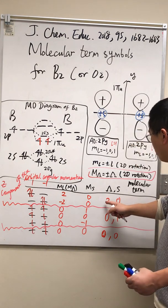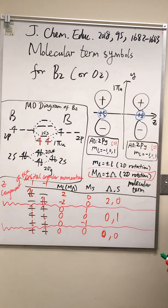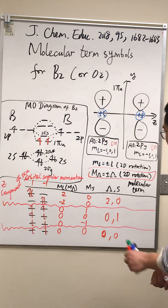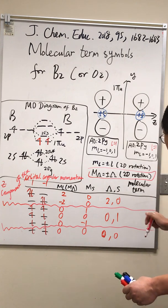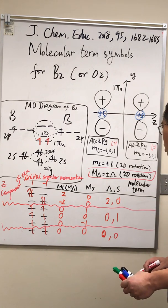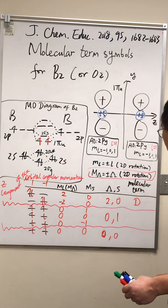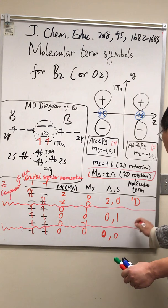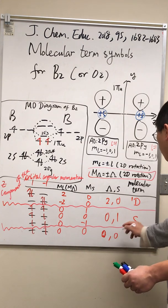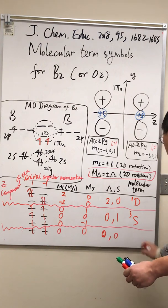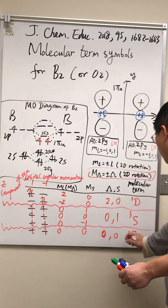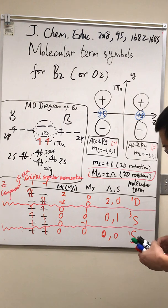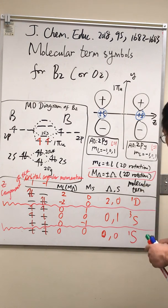We'll just recall in general chemistry we learned that the orbital angular momentum number is zero, one, two, three, four: s, p, d, f orbitals. And correspondingly, when we have lambda equals two, that's d symbol here, and the multiplicity is 2s plus one. When lambda is zero, the molecular term symbol is s, and the multiplicity is three. Over here both are zero.